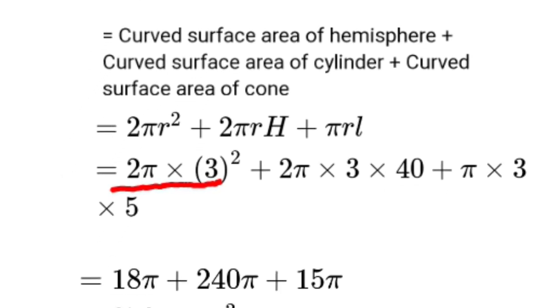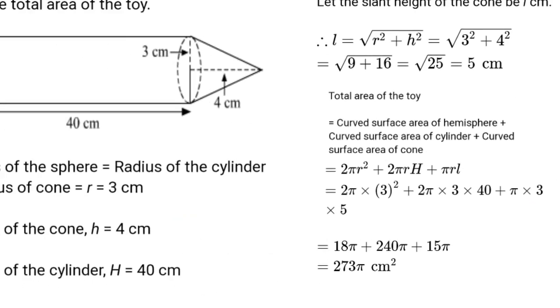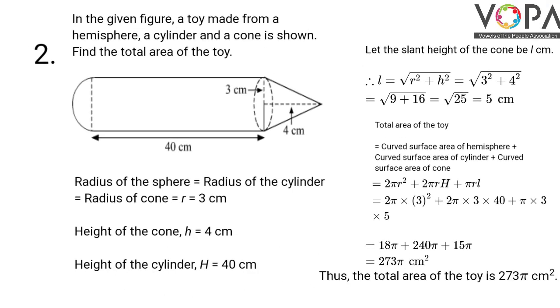Now 2 multiplied by 3², that is 9, gives you 18. So we have 18π + 2 × 3 × 40 gives you 240π + 3 × 5 will give you 15, so there it will be 15π. And addition of all the three numbers gives you 273π cm². Hence the total area of the toy is 273π cm².